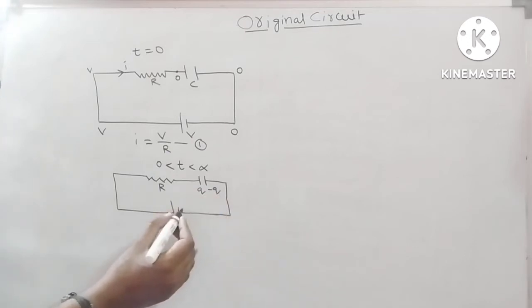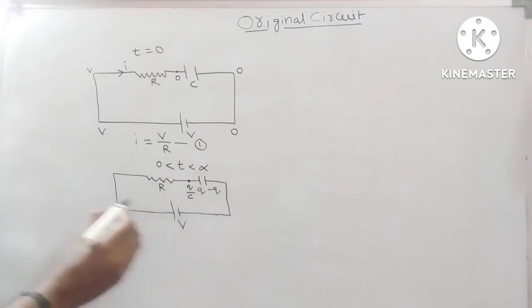Here Q, this is the minus Q. So, here potential Q by C. So, here potential V, here potential V.